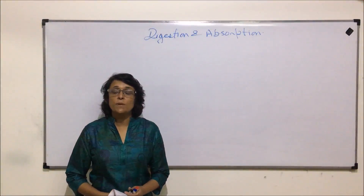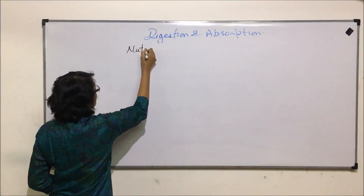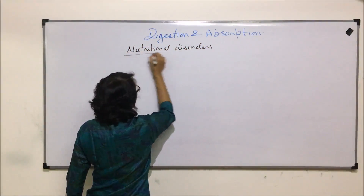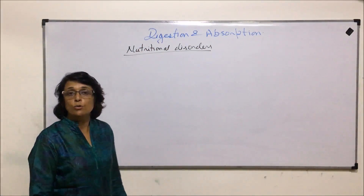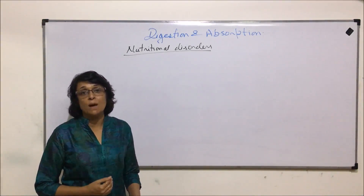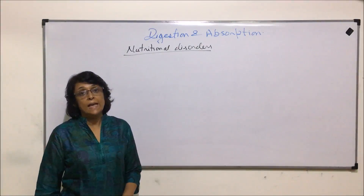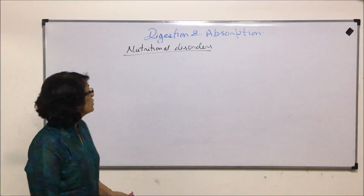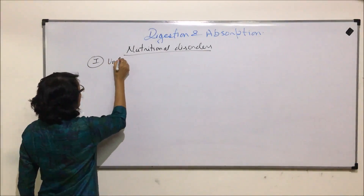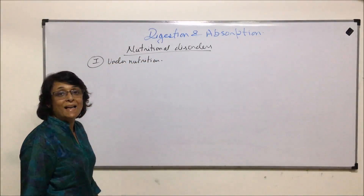In this section we will be discussing nutritional disorders. We will classify these disorders into two categories: one when nutrients are in less amount, that is deficiency or malnourishment related problems, and if certain things are in excess. So the first category is under-nutrition, or what we call malnutrition.